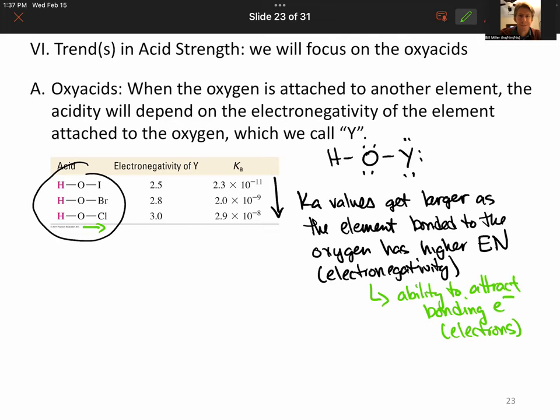And that weakens the HO bond. And in fact, the weaker that HO bond, the easier it is to break and the more acidic it is. So weakens the HO bond, which makes it easier to break, makes HO bond easier to break.